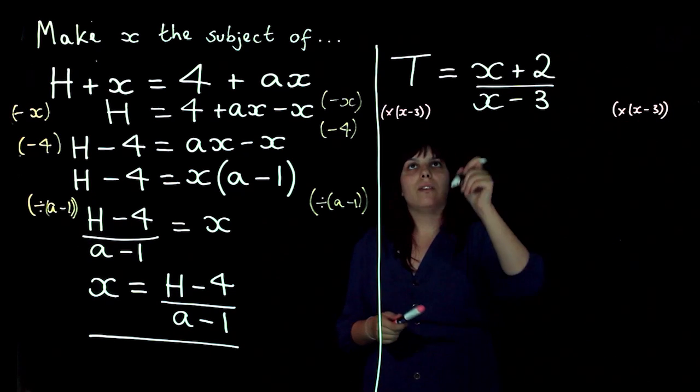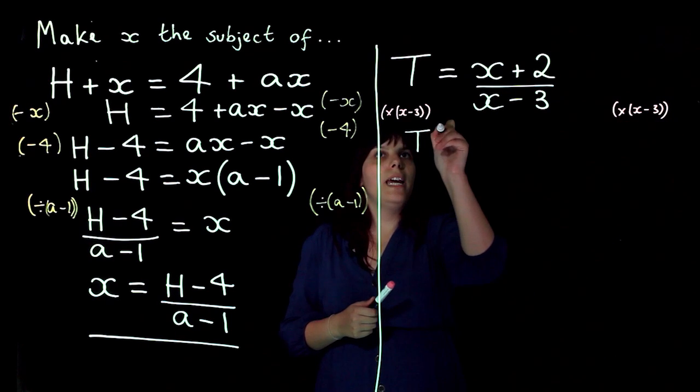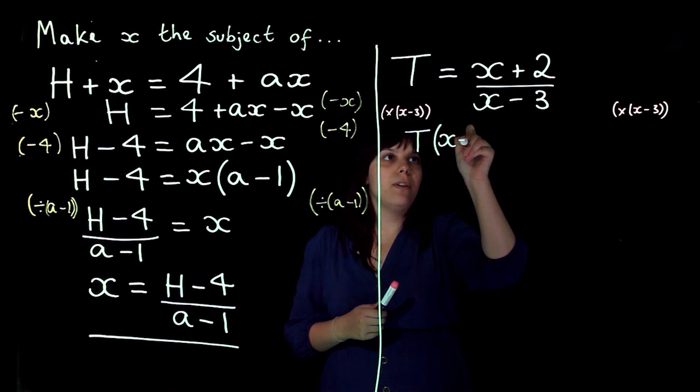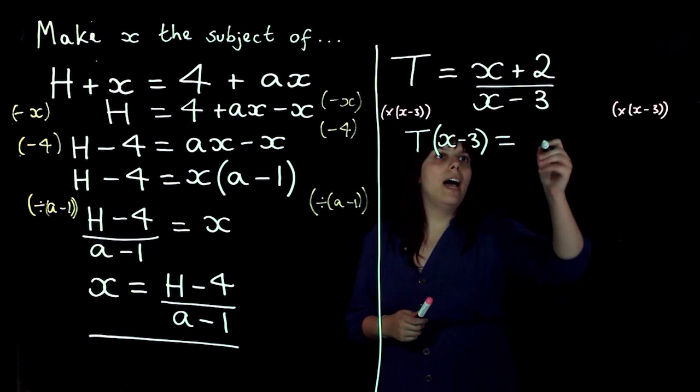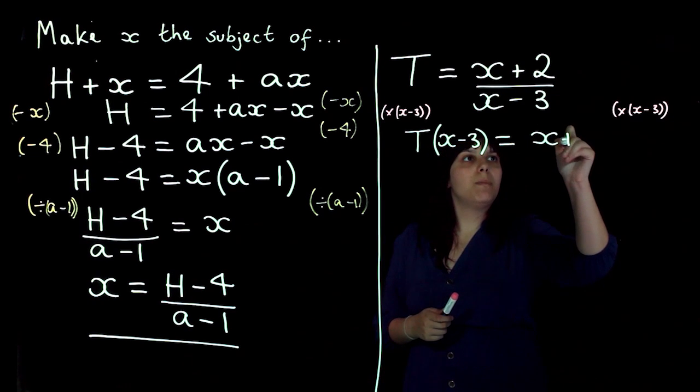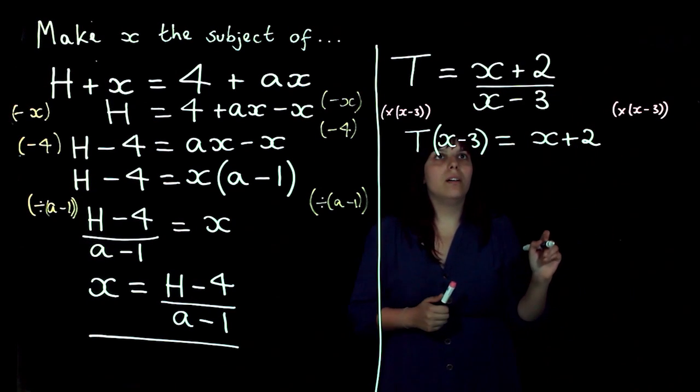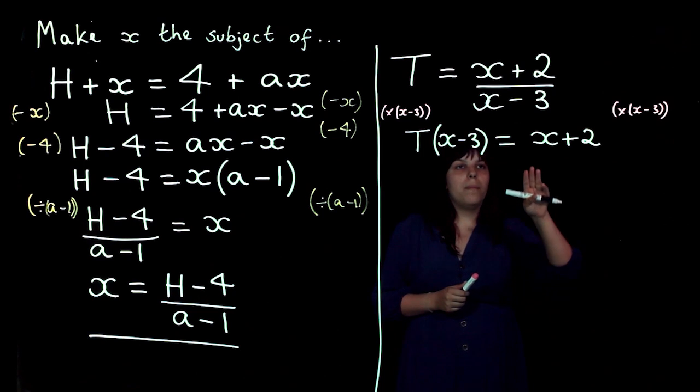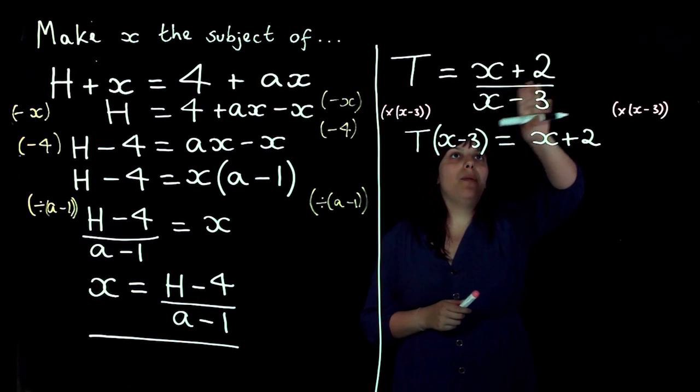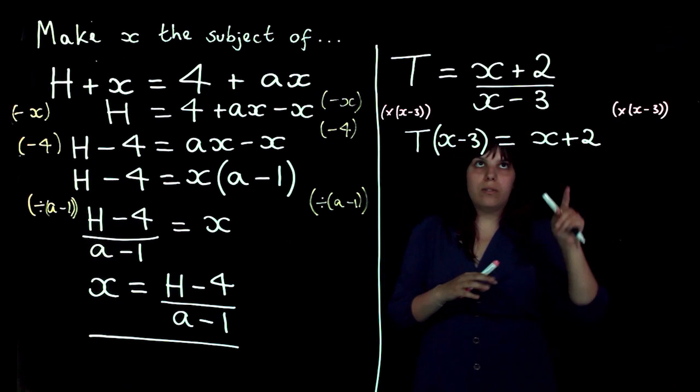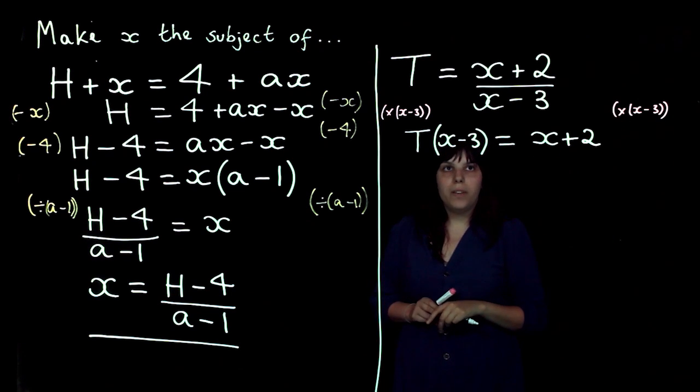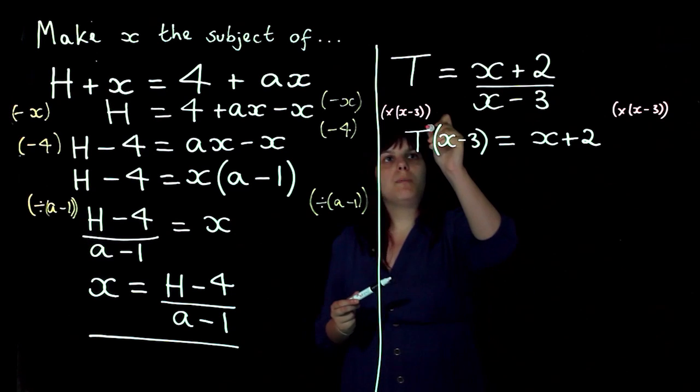So that means on this side I'm going to have t times x minus 3. Remember, try and keep your equals in line if you can. And then on this side I'm going to be left with x plus 2 because x plus 2 over x minus 3 times x minus 3 cancels out just to give me x plus 2. Now I'm going to multiply this out.